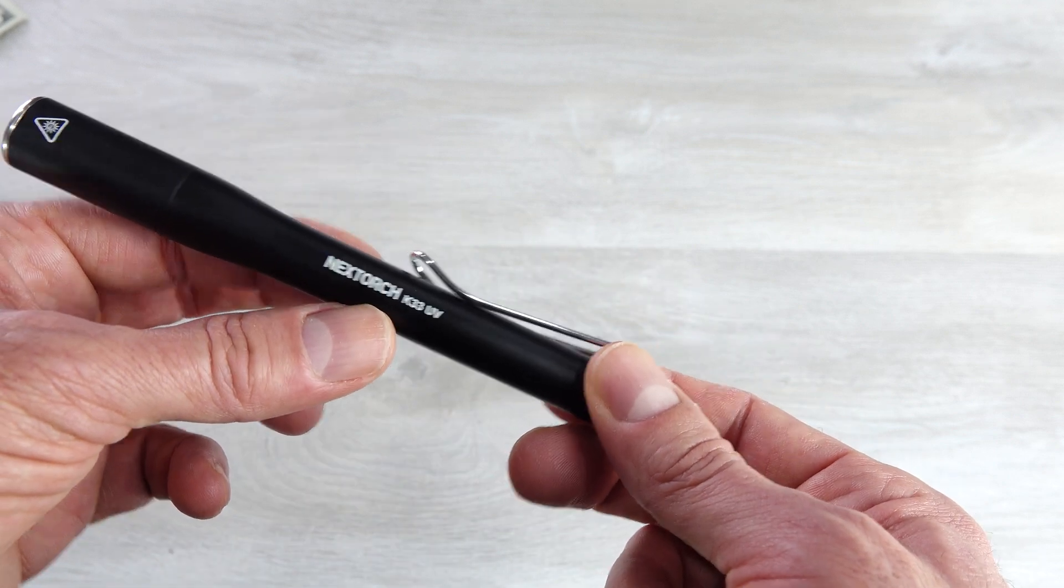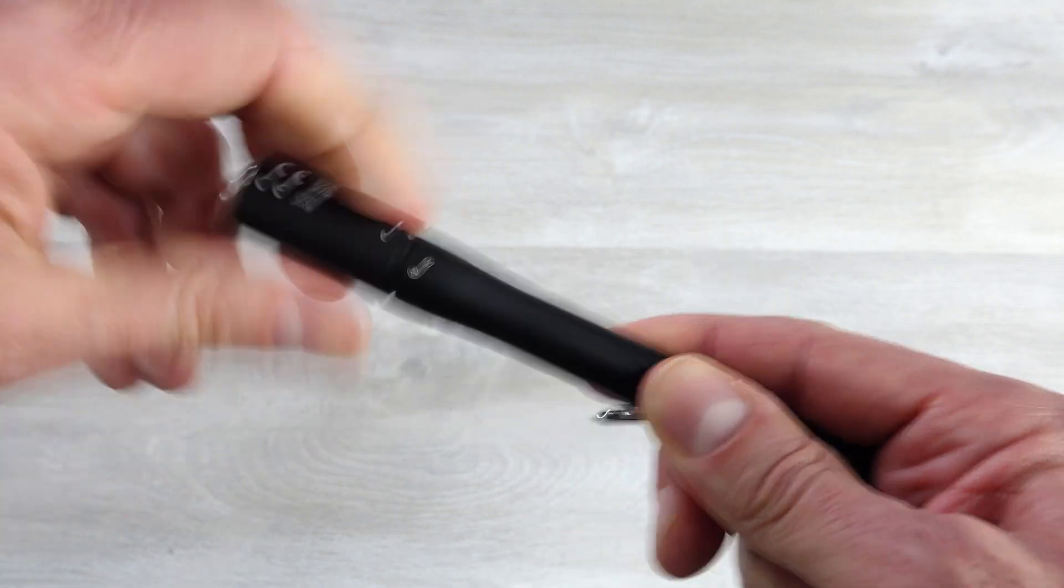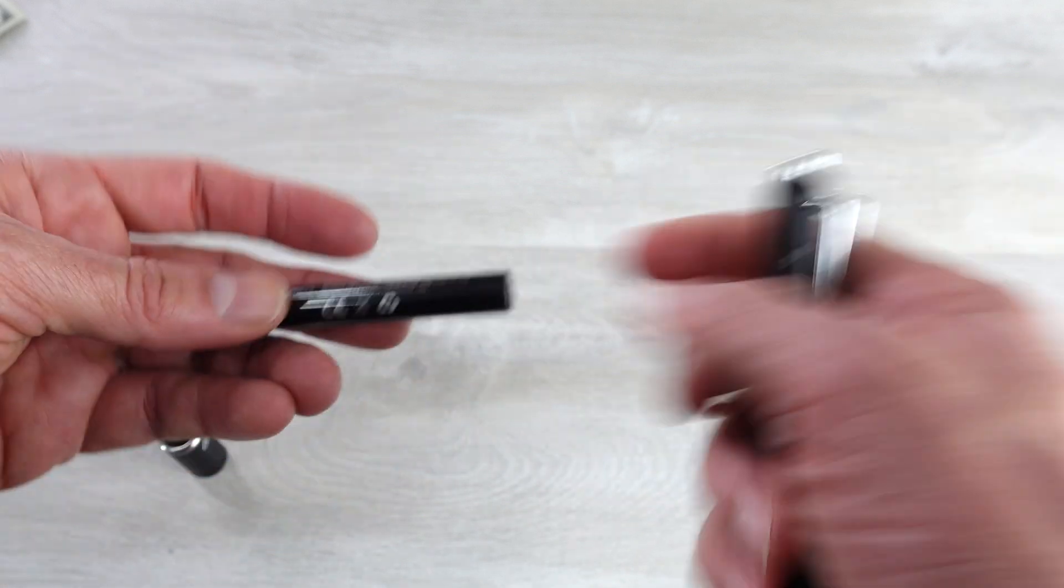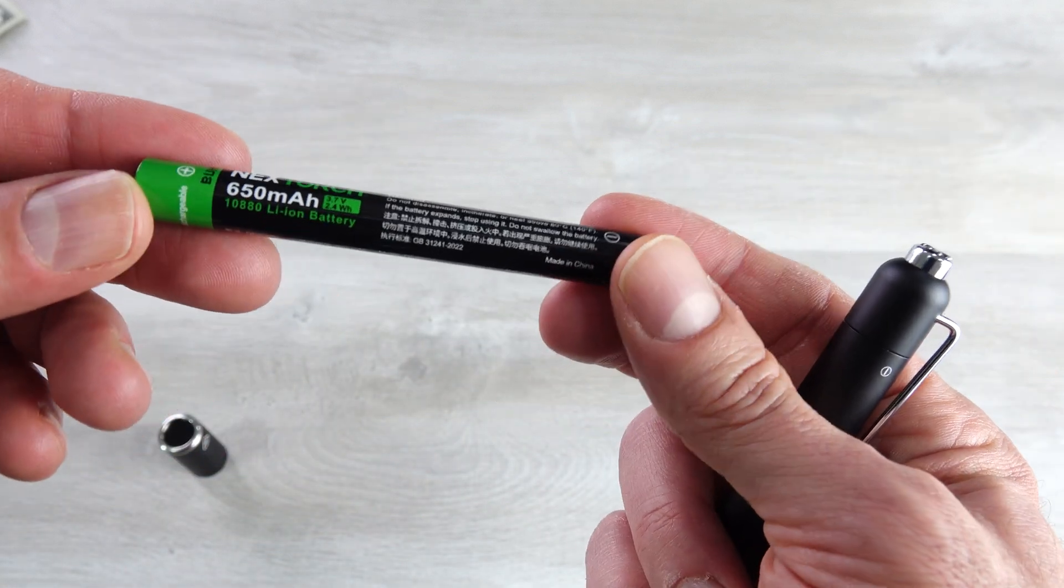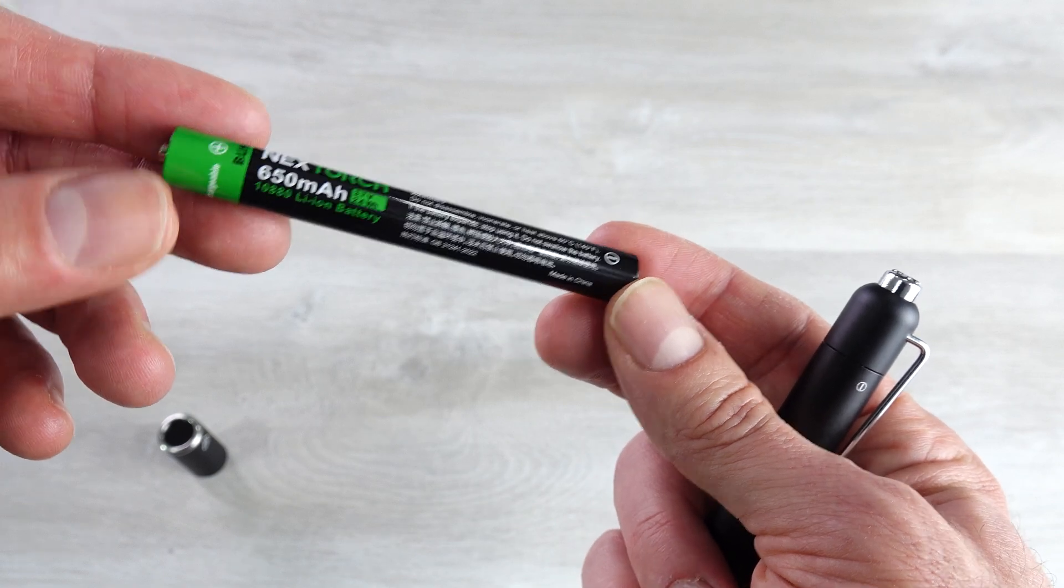The body has the model name there, nothing on the other side. Down to the head here, this screws off. And on the inside, this comes with a 10180, 650 milliamp hour battery. This is the equivalent of two AAA batteries.